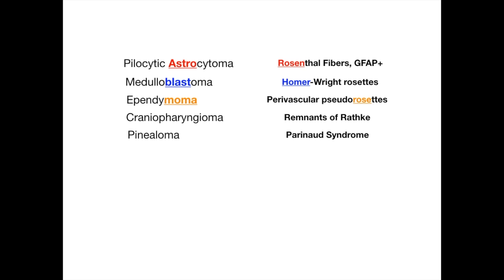For craniopharyngioma, all you need to memorize is that these are remnants of Rathke's pouch. If you see 'Rathke' anywhere on your exam, the answer is craniopharyngioma — don't think twice, just pick it. For pinealoma, it causes Parinaud syndrome. Remember the P's: pinealoma for Parinaud syndrome. That association is extremely high yield.